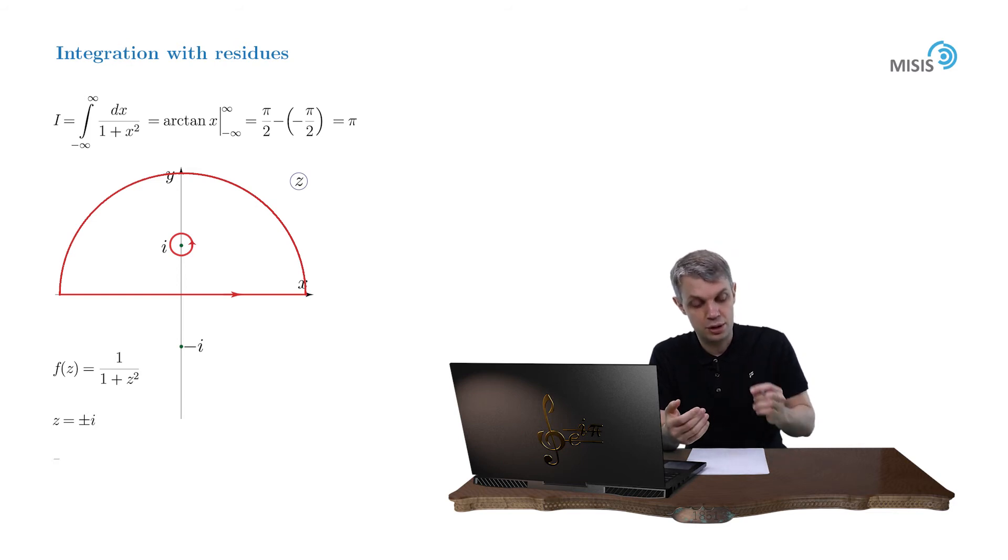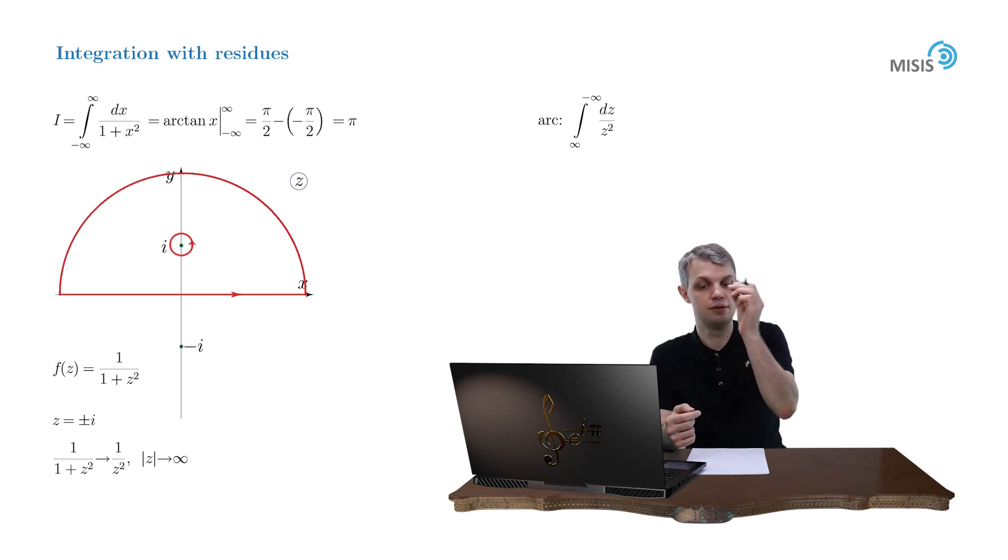And the asymptotics is always simpler than the original function. For example, here we have 1 over 1 plus z squared. At large z, it is turned into 1 over z squared. So basically, we compute the integral dz over z squared as we move along this arc from plus infinity to minus infinity. And it has a very simple antiderivative, minus 1 over z. And this integral will be given by the difference of these antiderivatives at point plus infinity and minus infinity. But 1 over z vanishes at plus infinity and minus infinity. And that means that this arc integral is actually equal to zero.